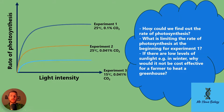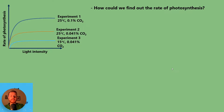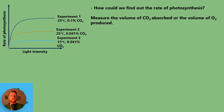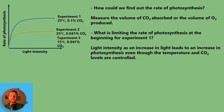Now a few questions — pause and answer these. First, how could we find out the rate of photosynthesis? Second, what is limiting the rate of photosynthesis at the beginning for experiment one? Third, if there are low levels of sunlight — e.g. in winter — why would it not be cost-effective for a farmer to heat a greenhouse? Answer one: measure the volume of CO2 absorbed or oxygen produced. Answer two: light intensity, because an increase in light — our independent variable — leads to an increase in photosynthesis even though temperature and CO2 are controlled.